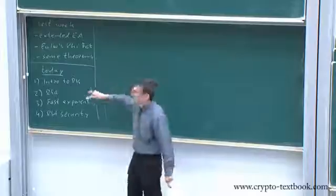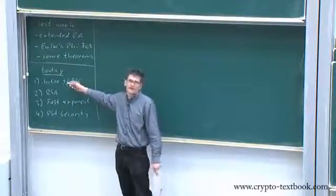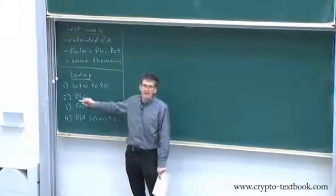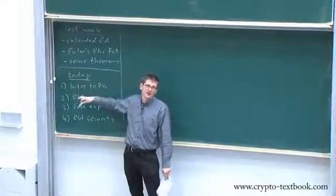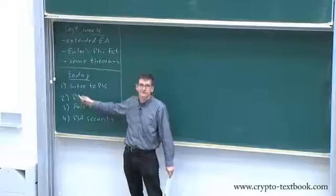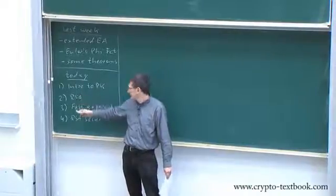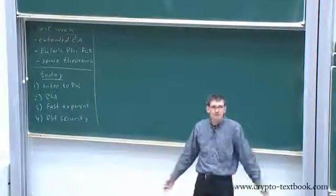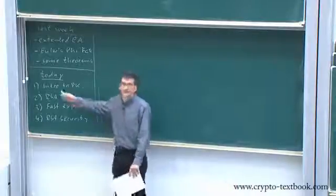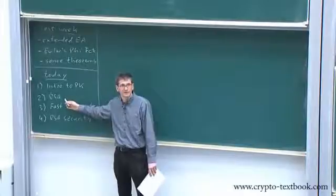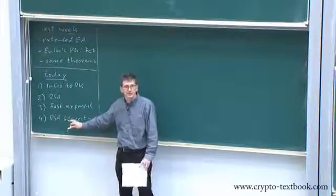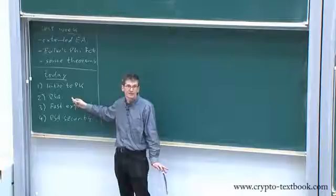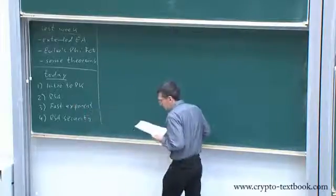We're going to do three things. We start with an introduction to public key — or asymmetric cryptography. The two main parts of the lecture are: the RSA cryptosystem itself and the algorithm, and then fast exponentiation, which is an algorithm for implementing RSA. Towards the end we'll talk about the security of RSA. Very important stuff will be on the exam — pay attention, be alert.